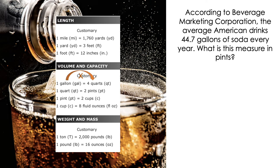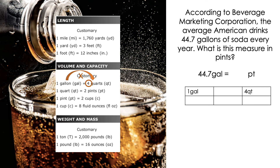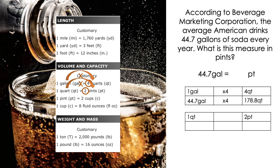Let's start with step one: going from gallons to quarts. For one gallon there are four quarts, so I multiply by four. Forty-four and seven tenths gallons times four is equal to 178 and eight tenths of a quart.